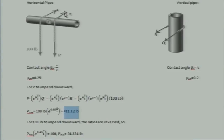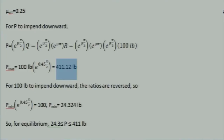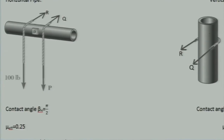The free body diagram will solve the problem. You have P and Q, then Q and R, then R and 100. For impending motion downward: P is greater than Q, Q is greater than R, and R is greater than 100 — we go sequentially. Then we reverse this order when impending motion is upward.